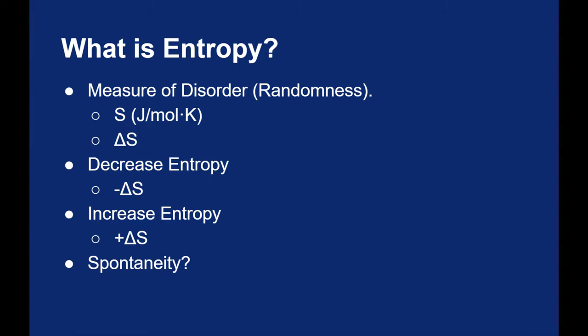Think about your own life. What tends to be more spontaneous — things that increase entropy or things that decrease entropy? Does your room spontaneously have a negative delta S value as you live in it, or a positive delta S value? Generally speaking, things tend to get more random and more disordered as time goes by. There are exceptions to this, but generally when we see an increase in delta S — a positive delta S — we'll think of a reaction being spontaneous.